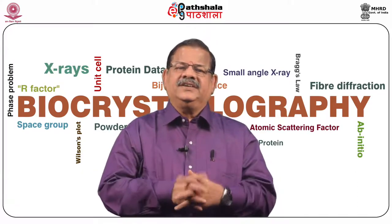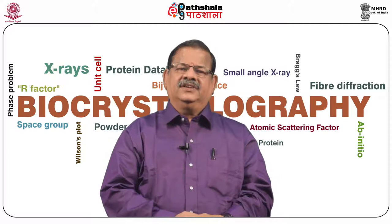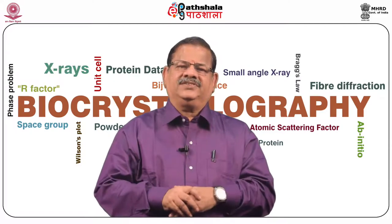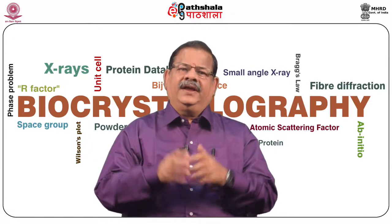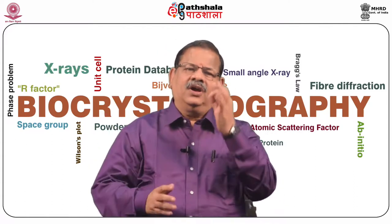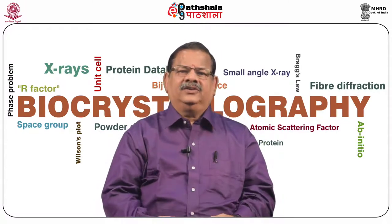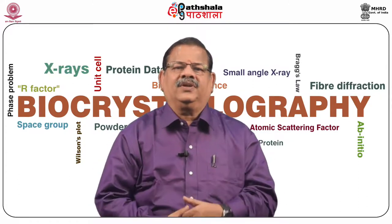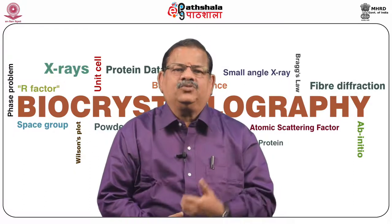Direct methods assume well-resolved random distribution of atoms. Atomic resolution data is a main criterion for the successful working of direct methods, as in this case the electron densities of the atoms do not overlap. This is seldom the case in macromolecules. Due to technological improvements today, it is now possible to grow crystals of many macromolecules diffracting to atomic resolution, so direct methods can be applied to these data. One example of this is the program ACON, and there is another program from the Chinese Academy of Sciences called OASIS.